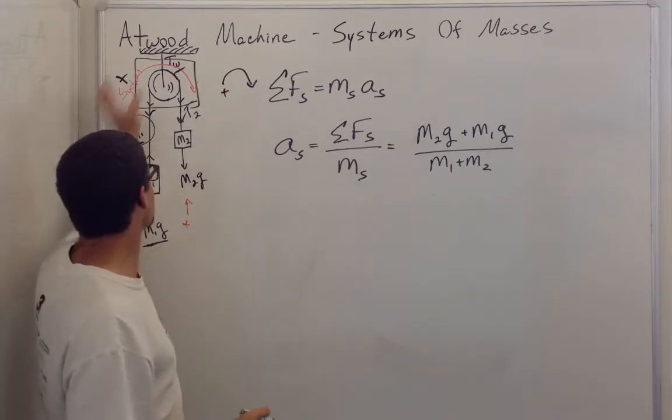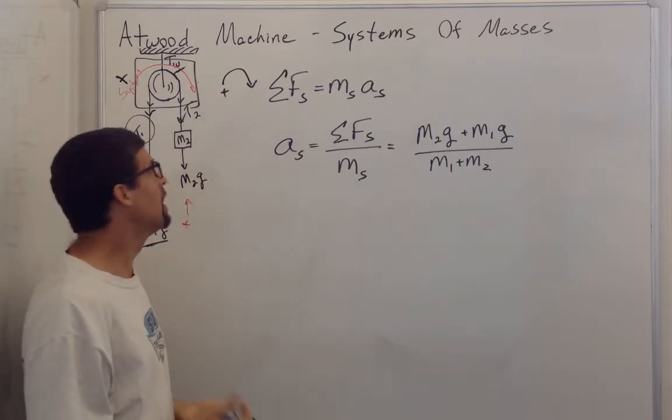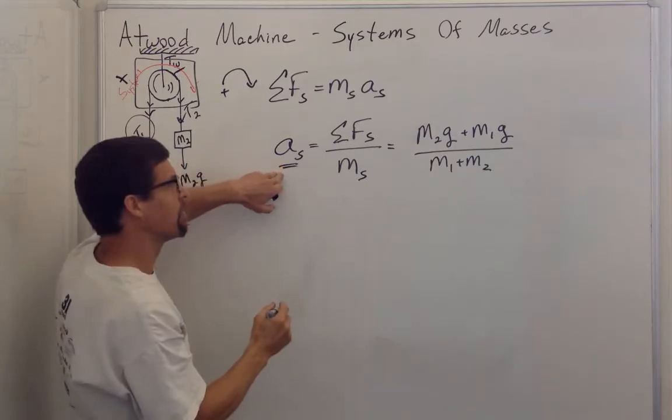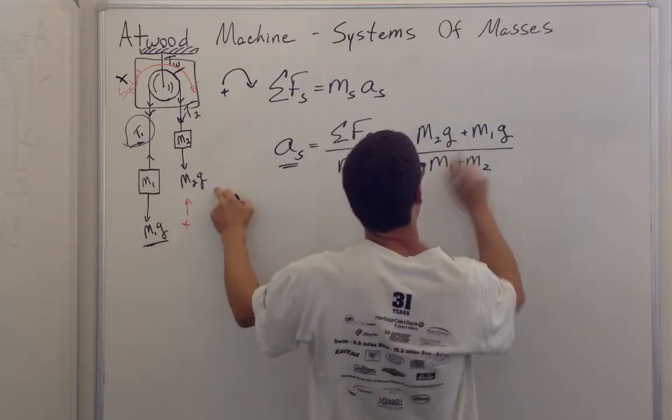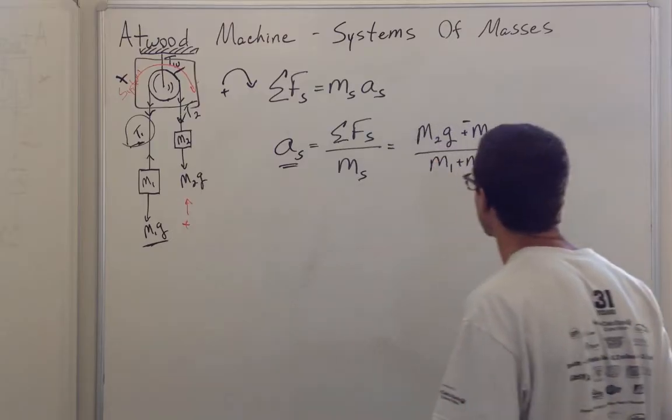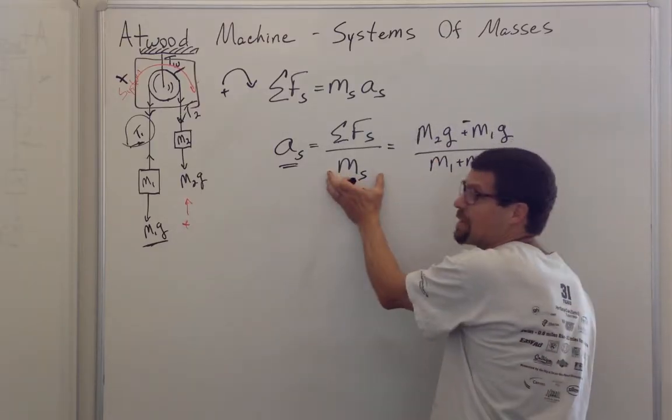This force is a negative force and this is a positive force. I can solve for the acceleration of the system and see these two forces and say, oh, this is positive, this is negative. And this is the mass that I'm accelerating.